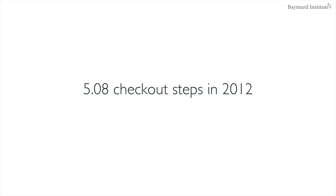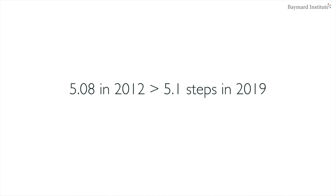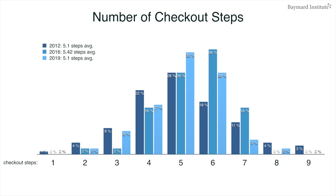In 2019, when counting largely the very same 60 largest sites in the world, how long are their checkout flows now? The number is 5.1 — no change whatsoever across seven years. Let me show how it breaks down, including the 2016 numbers. Looking at the distribution, there aren't really that many true one-step checkouts — those are actually on decline. And on the other end of the scale, eight and nine steps are also disappearing. The big evolution over the past seven years — even though the average is still the same — is a tendency for longer checkout flows among some e-commerce sites. The column for six checkout steps actually doubled from 2012 to 2016.